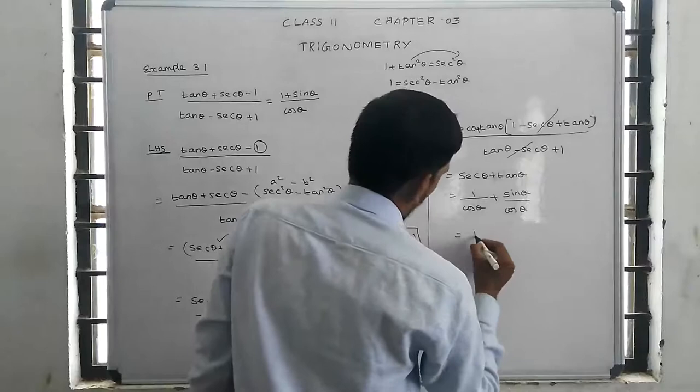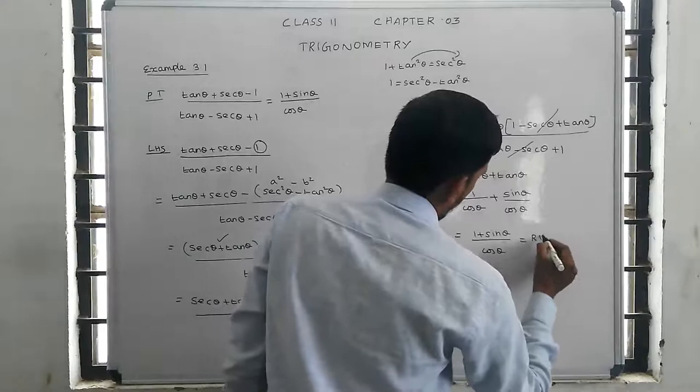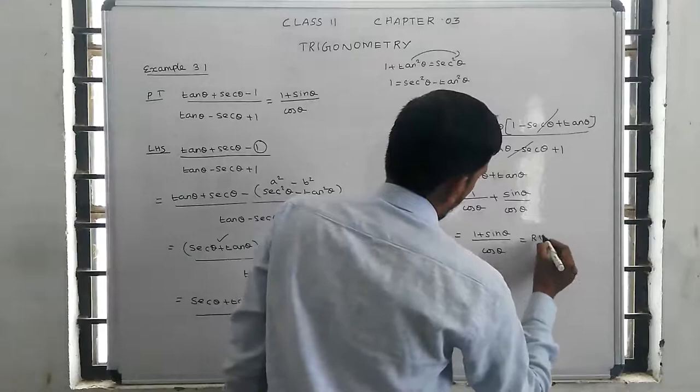So combining, we get 1 plus sin theta divided by cos theta. This is the same as the right hand side. Hence the identity is proved.